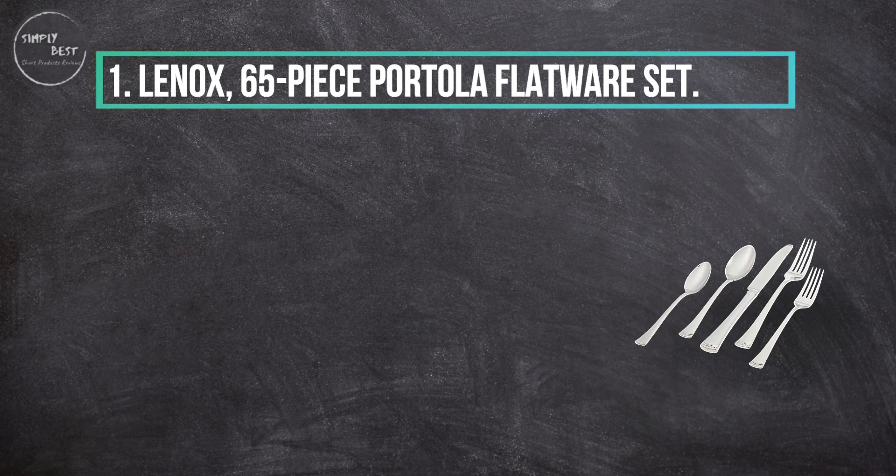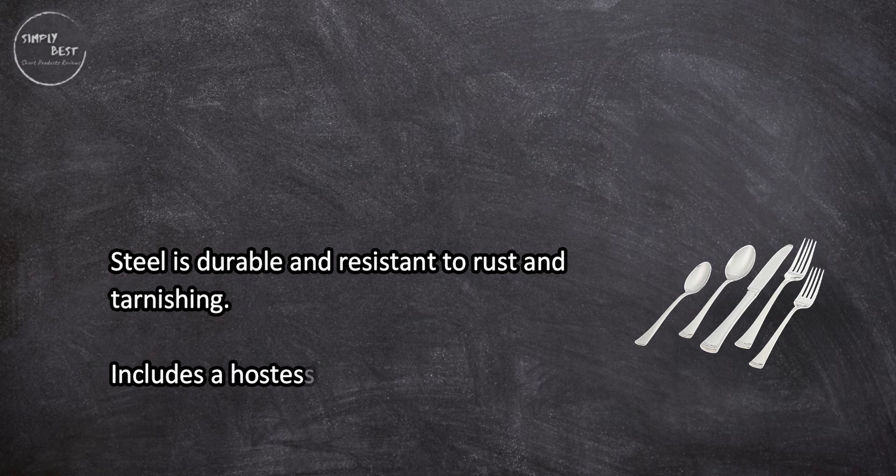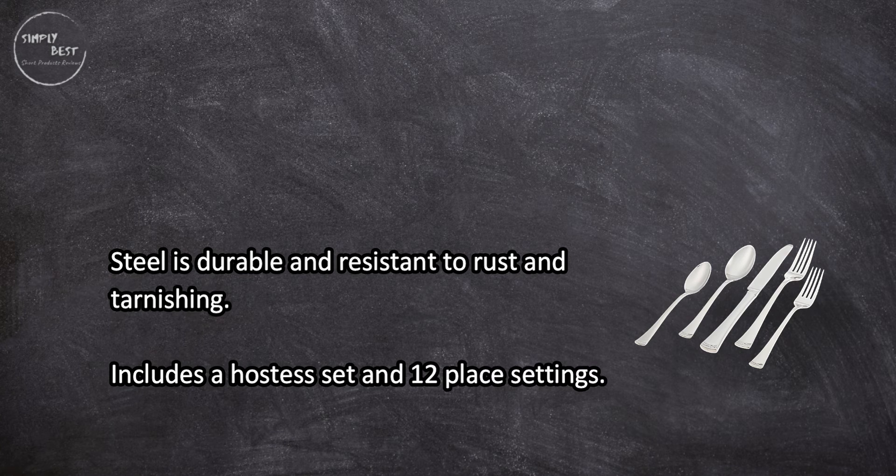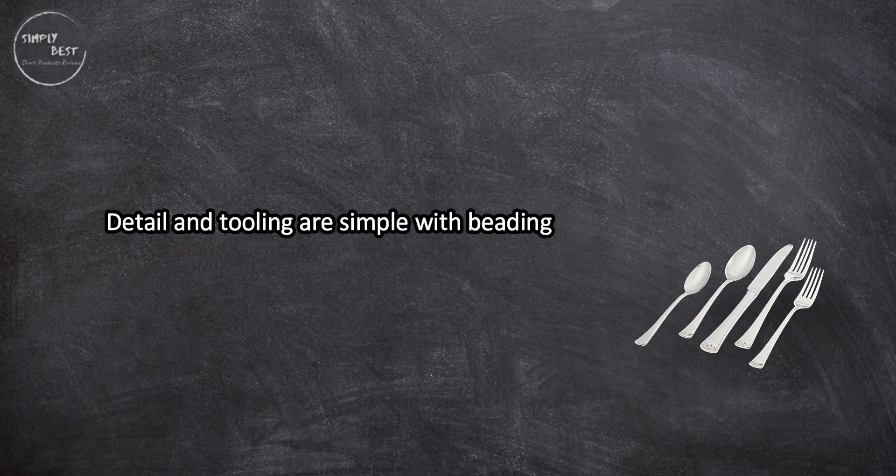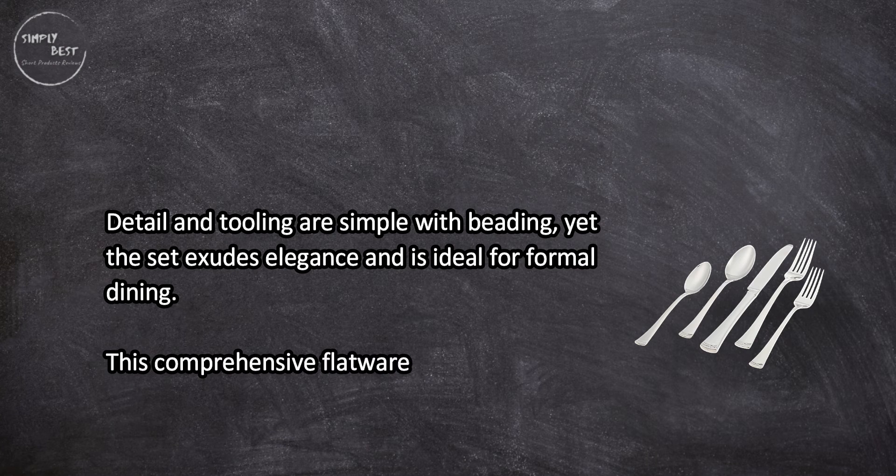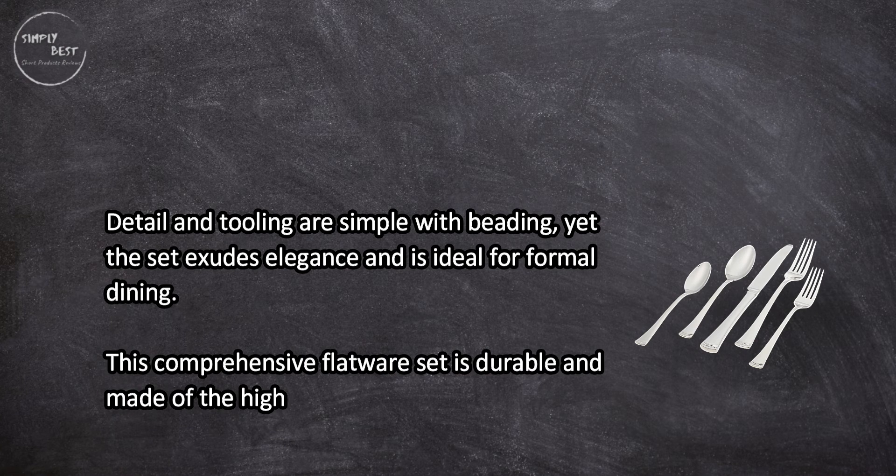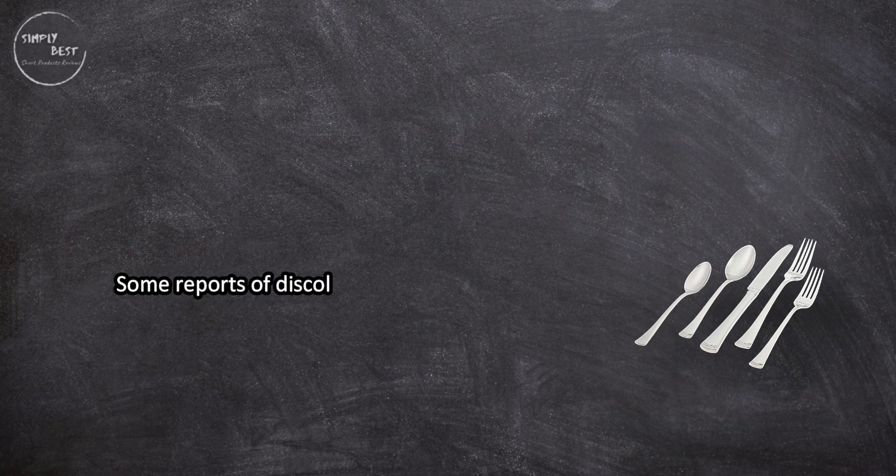At number one, Lenox 65-piece Portola Flatware Set. The steel is durable and resistant to rust and tarnishing. It includes a hostess set and 12 place settings. The detail and tooling are simple with beading, yet the set exudes elegance and is ideal for formal dining. This comprehensive flatware set is durable and made of the highest quality. Some reports of discoloration in the larger hostess set pieces.